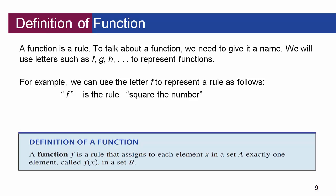A function is basically just a rule. It's telling us that the output is going to be based on doing some stuff to the input. At its core, the only rule that makes something a function is that you must assign every input value — every x that you're putting into your function — to one and only one output. Each x gets mapped to each y, or what we'll call f of x. You just can't have an input going to two numbers.